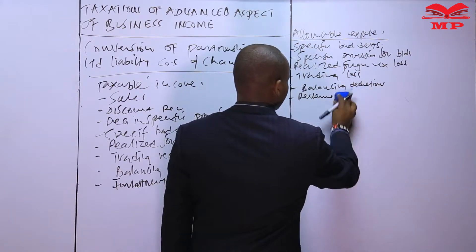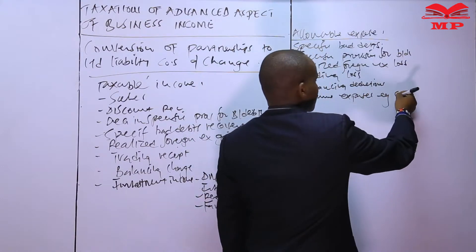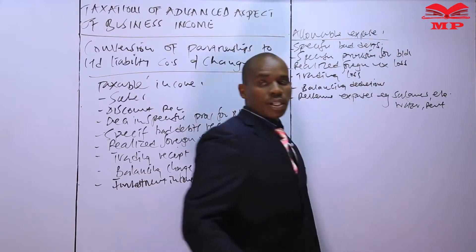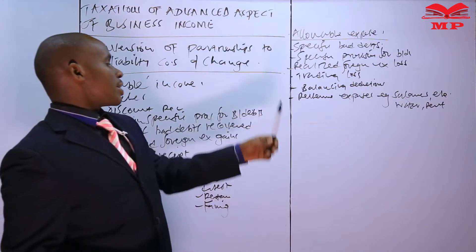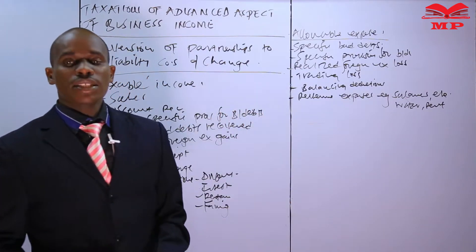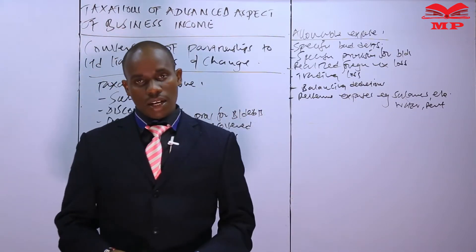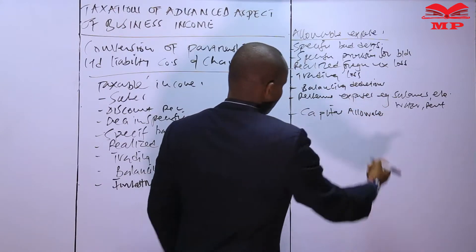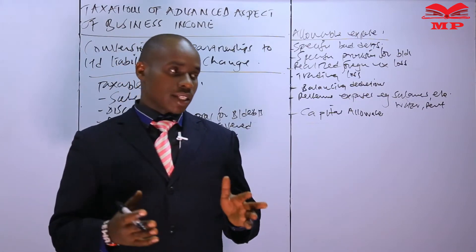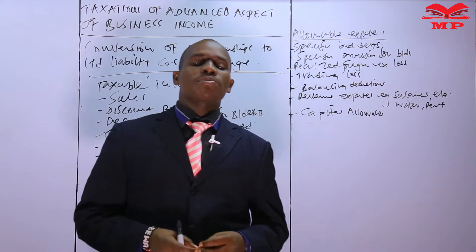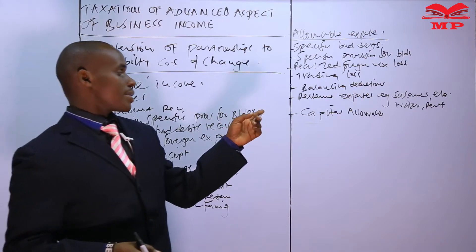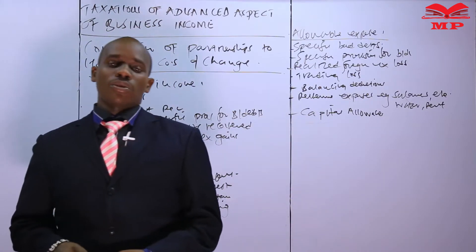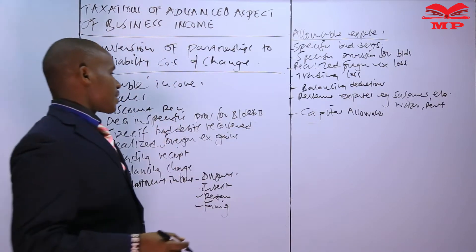Other allowable costs include revenue expenses such as salaries, electricity, water, and rent — all expenses incurred by the partnership in the process of generating taxable income. We also have capital allowances, which are deductions made when the partnership has bought assets used in the generation of taxable income. That capital allowance value should be deducted and treated as an allowable cost.